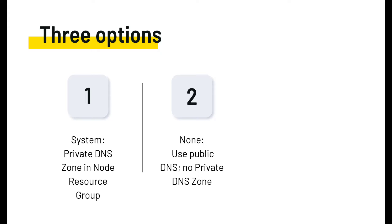The second option is the 'none' option - you don't want a private DNS zone. You still need name-to-private-IP translation, but instead public DNS is used. Microsoft creates a name for your API server that is resolvable by public DNS servers to a private IP. Your systems still need to be on the private network. This is an easy option if you don't want to deal with private DNS. Note that this option is in preview today.